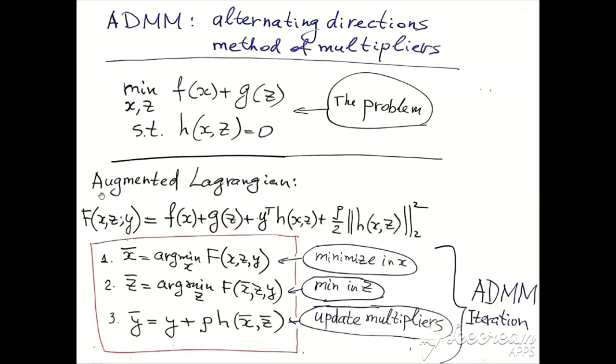In standard augmented Lagrangian or penalty multiplier methods, at every iteration we would minimize our augmented Lagrangian in X and Z jointly, and then update multipliers. In ADMM, the process is slightly different and more simple. We just minimize augmented Lagrangian in X, then from the obtained point, fixing X, we minimize it in Z, and then update multipliers.